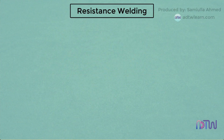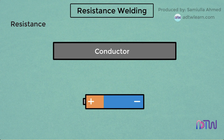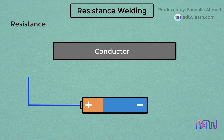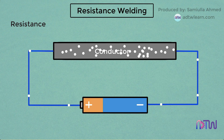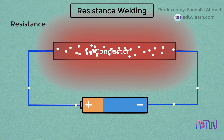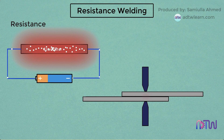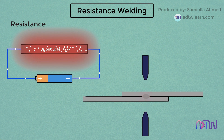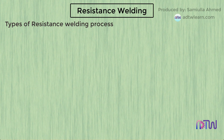Resistance welding: resistance is the property of a conductor by virtue of which it resists the flow of electrons, that is the flow of current through it. This resistance to the flow of electrons creates friction and heat. This heat generated is then used to join two similar or dissimilar metals by melting and forming a bond between them. Types of resistance welding processes: